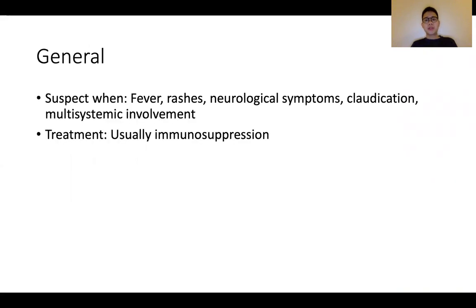Before we move on to the specifics, these are some of the symptoms or manifestations when present to consider suspecting vasculitic disorders. They can be fairly non-specific, such as fever and malaise, but some things that should prompt thinking would be rashes, neurological syndromes, as well as claudication. Patients will come in with multi-systemic involvement. Treatment generally is immunosuppression and patients will normally be managed by a rheumatologist.